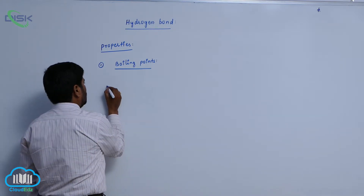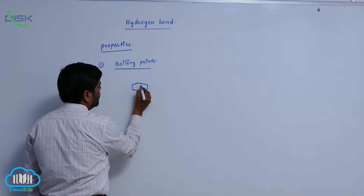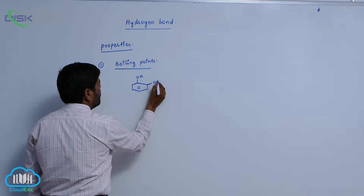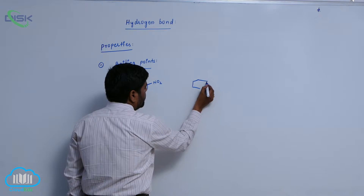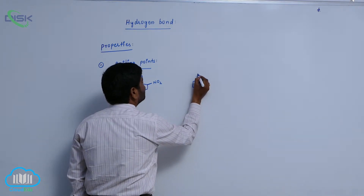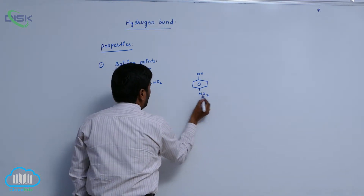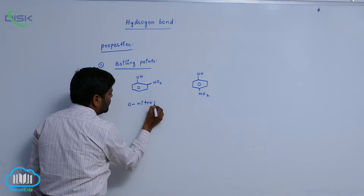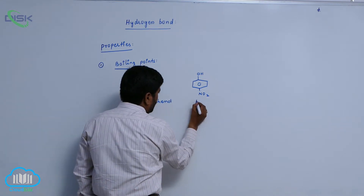For example, this is ortho-nitrophenol. The next one is para-nitrophenol. One is ortho-nitrophenol and another is para-nitrophenol.